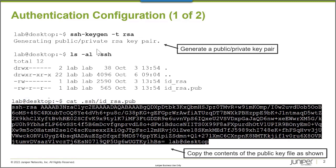It's automatically created in my home directory — home/lab. There's a .ssh directory, and this is the interesting file: the id_rsa.pub file. I want to view the contents of that file, and here's the key.